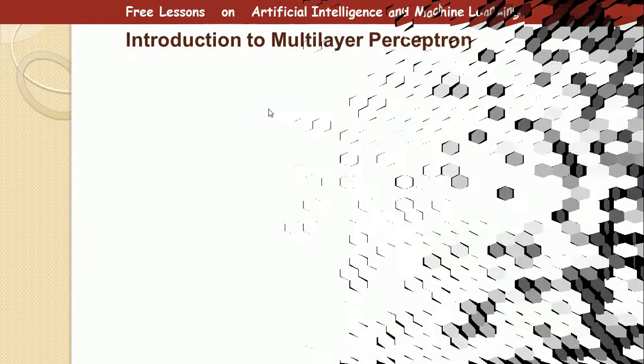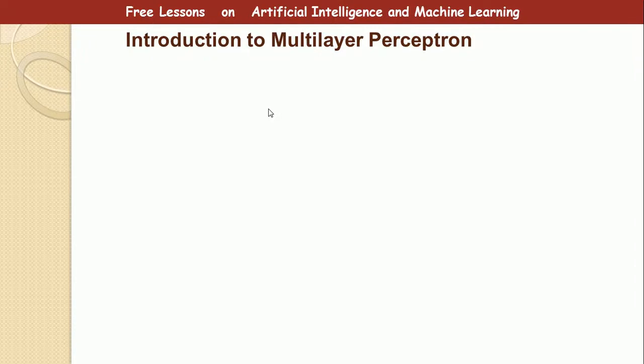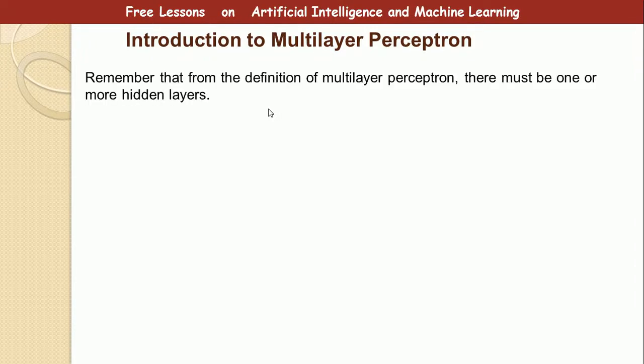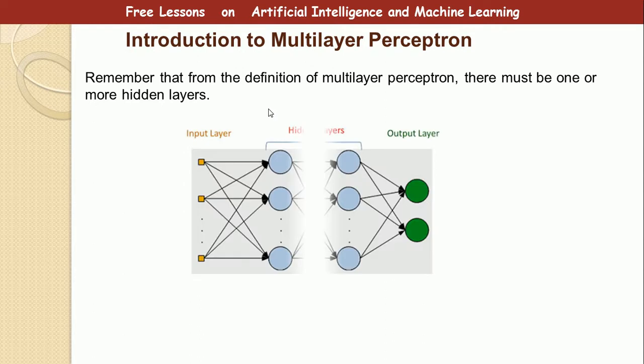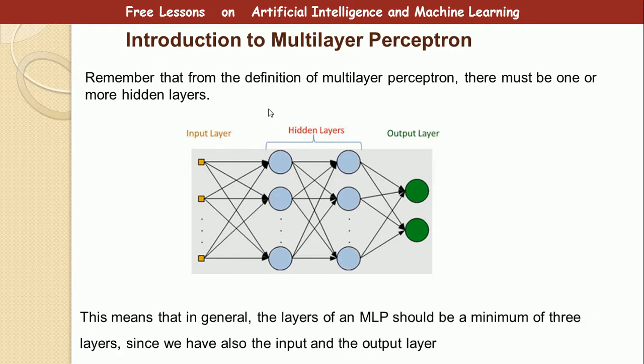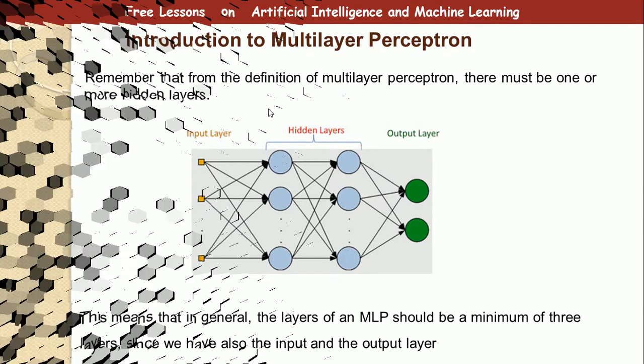So, now we have the multilayer perceptron as the name implies. It is a neural network made up of different layers. A multilayer perceptron there must be one or more hidden layer. So there must be a minimum of three layers since we have one input and one output and then we must have a hidden layer. That is about the multilayer perceptron, every other thing is the same with the perceptron we have discussed and every other concept of the neural network.